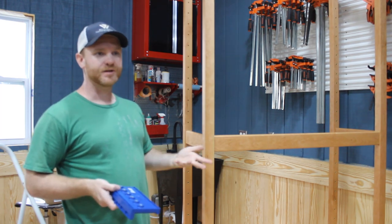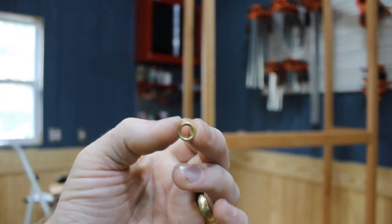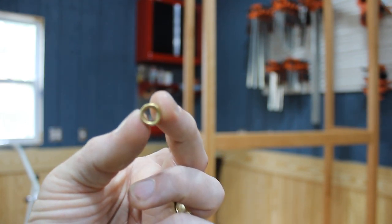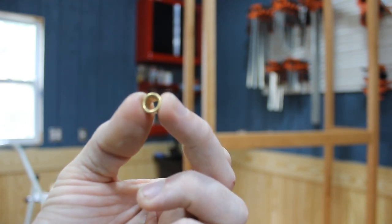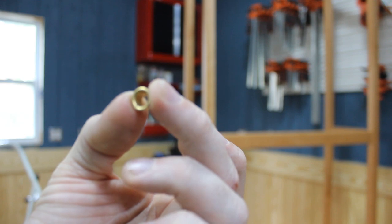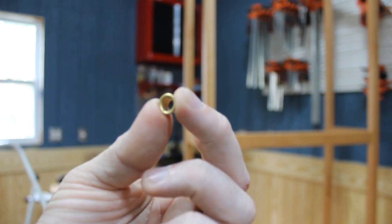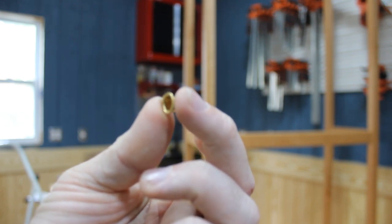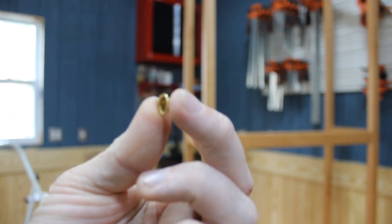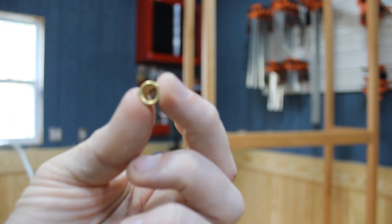So I'm adding these shelf pin sleeves. What they do is they go into the shelf pin hole you normally drill with your shelf pin jig, and you end up with a quarter inch hole. In most cases, sometimes they make a five millimeter hole, but in this case you end up with a quarter inch hole.